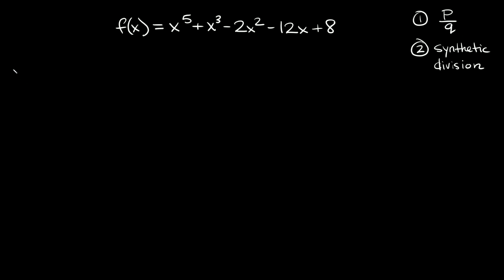So what does p over q mean? P, the number on top, represents the factors of your constant — the number at the very end. Here that's a positive 8. The factors of positive 8, the numbers that divide evenly into 8, are positive or negative 1, positive or negative 2, positive or negative 4, and positive or negative 8.